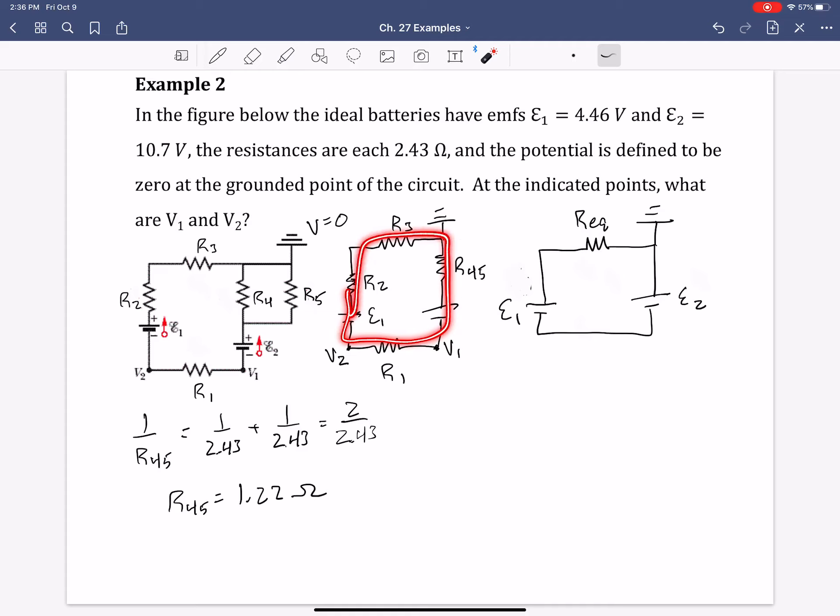And now this is the total equivalent or effective resistance. And that can be found, since now they're in series, this is one circuit loop, now they're all in series. So we just add them algebraically. So that is R1 plus R2 plus R3 plus R45. And so 1, 2, and 3 are all the same.